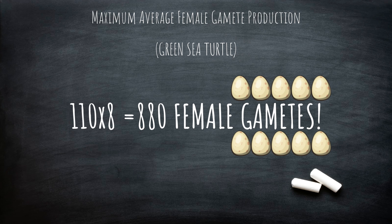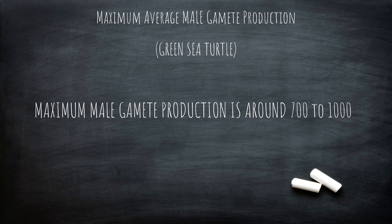This means that the number of male gametes as opposed to female gametes is very similar. An average of 700 to 1,000 male gametes are produced. Because of their Oviparous nature, male turtle gametes travel a smaller distance in order to fertilize. However, it is essential for turtles to copulate, as it is the only way the sperm and egg can meet.